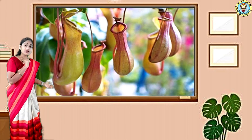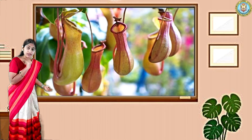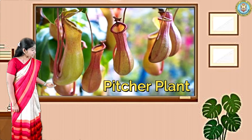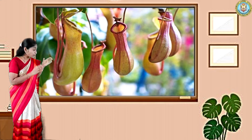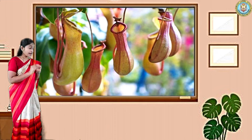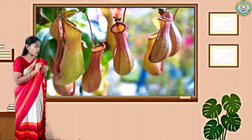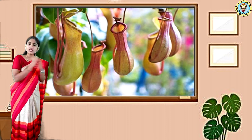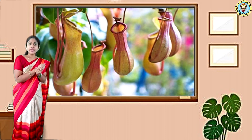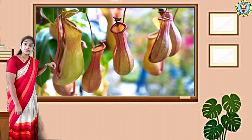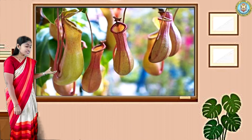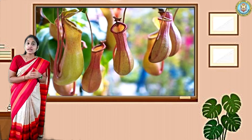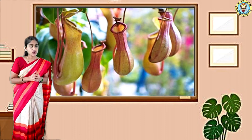Here is another example of an insectivorous plant — that is the pitcher plant. The name of this plant is pitcher plant. This plant has a cup shape. Whenever any insect sits on the rim of this plant, it immediately closes its leaves and the insect gets trapped inside the bowl shape, and the plant eats the insect.